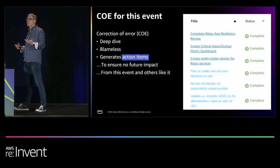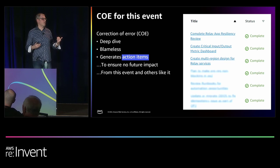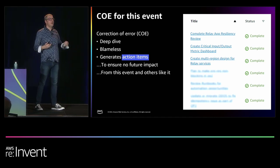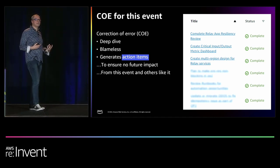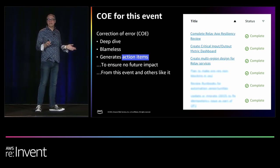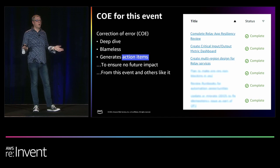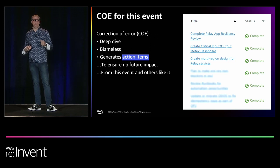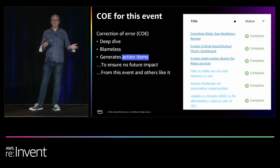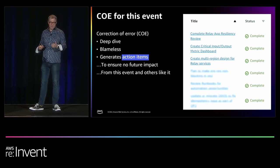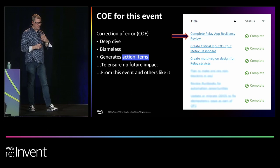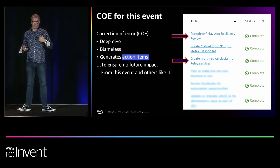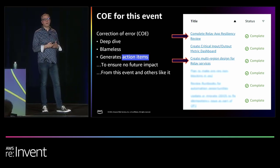The solution was to redesign to either not use SNS, make SNS a soft dependency, or use spares — setting up multiple instances of a resource so if one is not working you use the other. Since SNS is a regional service, they had to go to another region. But first, a cultural thing at Amazon: the COE, or Correction of Error event. When something like this happens, the team does a COE — a blameless deep dive into what caused the issue and how it could be avoided, not to find a culprit but to find the actual cause and come up with actions so issues like this can never happen again.